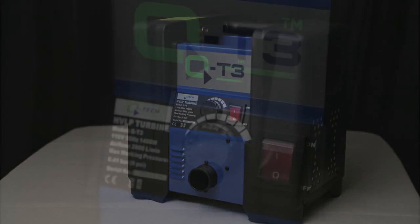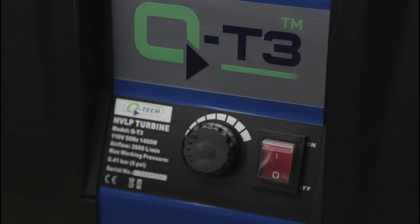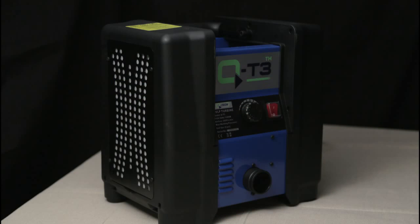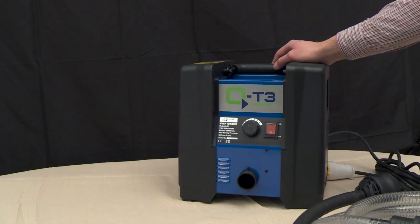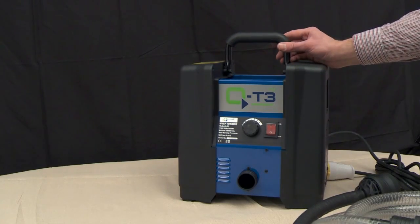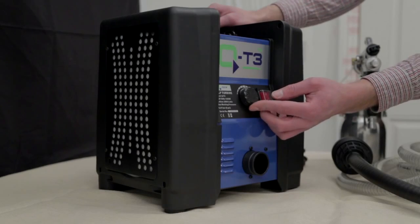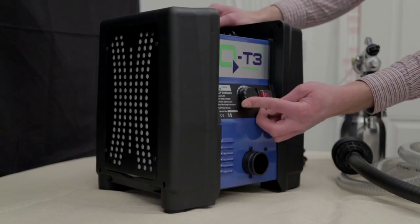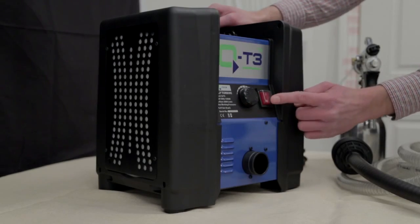Before starting to set up, it's important to point out where some of the features and controls are on the QT3 turbine unit and spray gun. On top of the unit is the carry handle. On the front control panel, you have a fan speed adjustment knob to increase and decrease airflow, and the on-off switch.